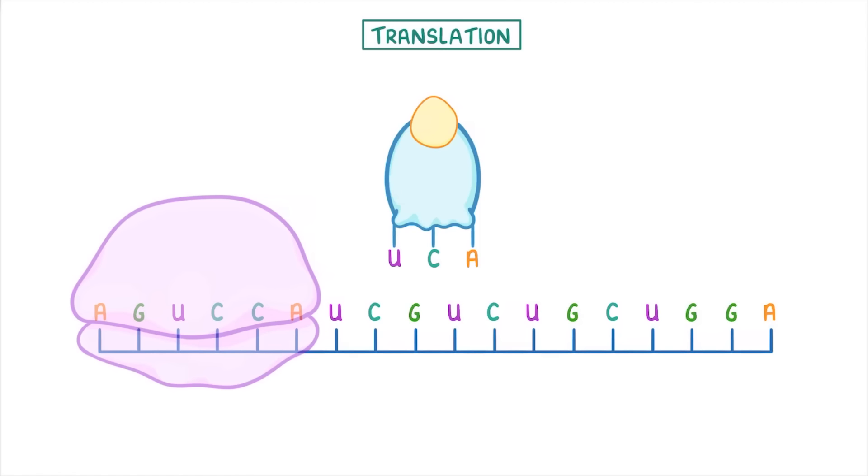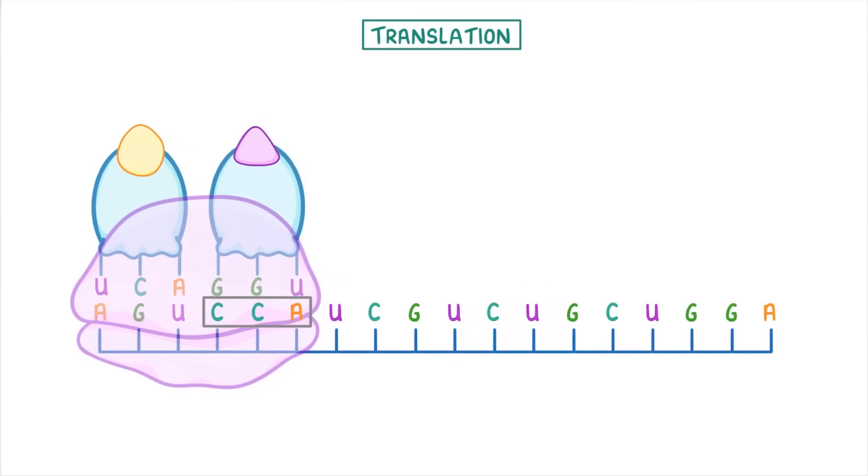For example, because the first triplet of our mRNA sequence here is AGU, it will attract this tRNA molecule with the anticodon UCA, because UCA is complementary to AGU. And the tRNA brings with it the amino acid serine, which is the code for serine. Meanwhile, this second triplet, CCA, will attract this tRNA molecule with the complementary anticodon of GGU. And that will be carrying the amino acid proline, because CCA codes for proline.